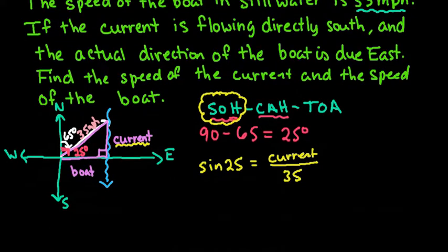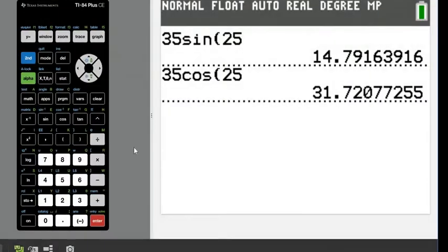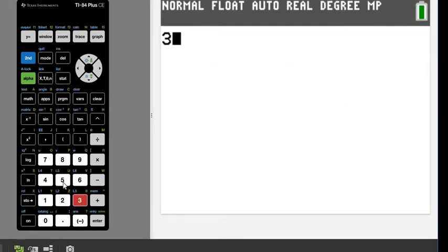If I solve this to get the current speed, you could abbreviate this as C and this as B. It doesn't really matter as long as you know what you're talking about. The variables are just there to help you. So I would just do 35 times sine of 25.